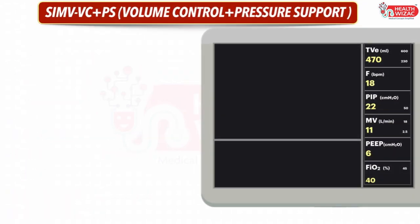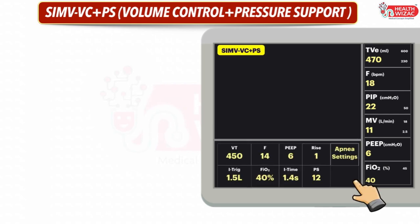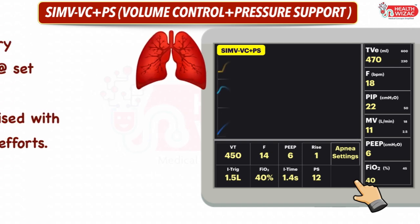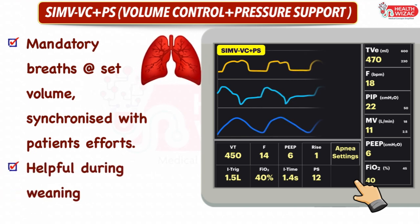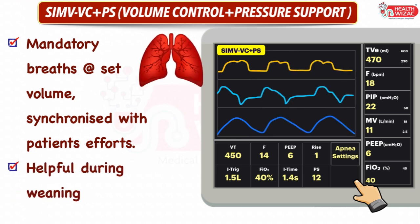Next is SIMV volume control plus pressure support mode. In this mode we have to set tidal volume, frequency, PEEP, rise time, inspiratory trigger, FiO2, inspiratory time, pressure support settings, and apnea settings for backup ventilation. In this mode, the ventilator provides mandatory breaths at set volume which are synchronized with the patient's spontaneous efforts.